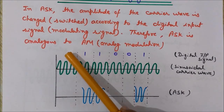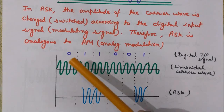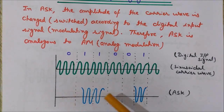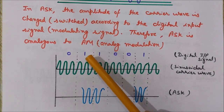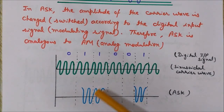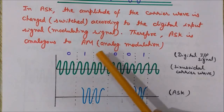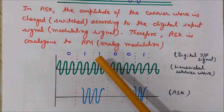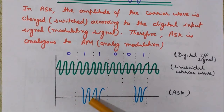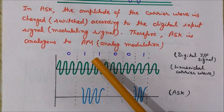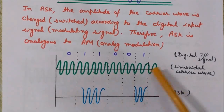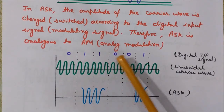As you can see in this example, at the places where the input is 0 — at three positions — no carrier wave is transmitted; nothing is sent. At the places where the input is 1 — at two positions here — the continuous sinusoidal carrier wave is transmitted. If we had three continuous ones, the carrier wave would be transmitted for the duration of those three bits. So the amplitude of the carrier wave has been changed according to the digital input signal.